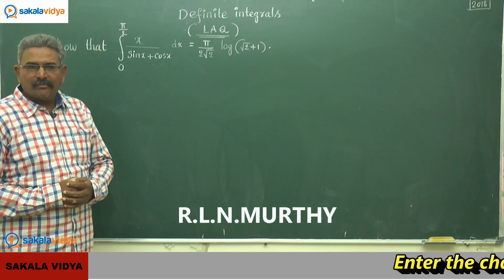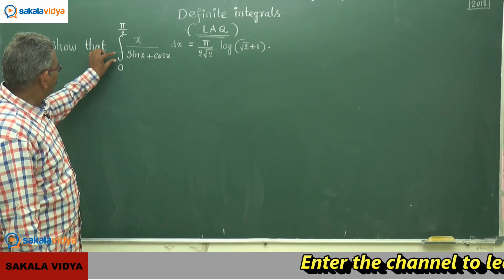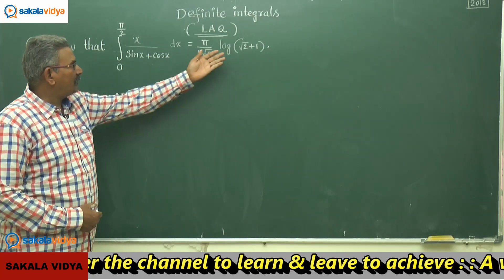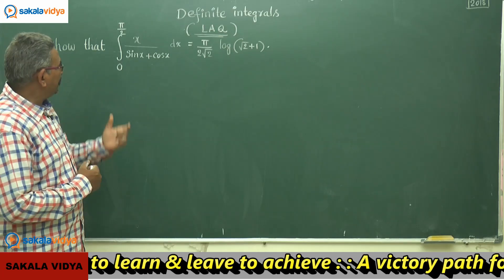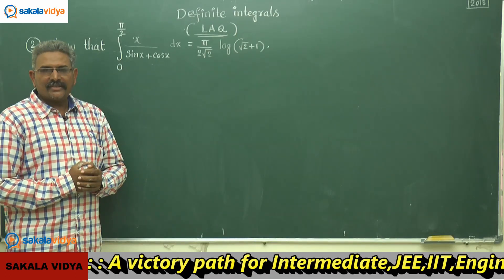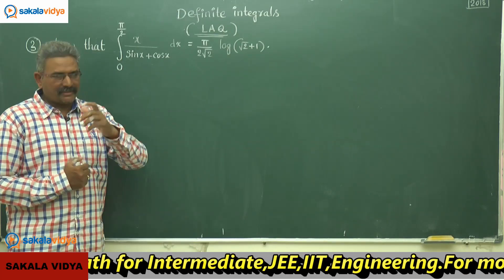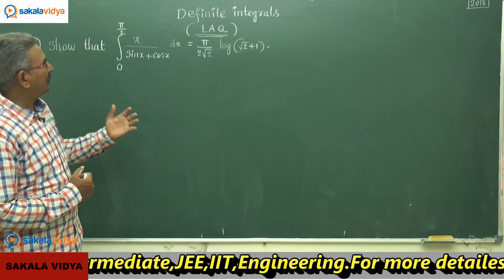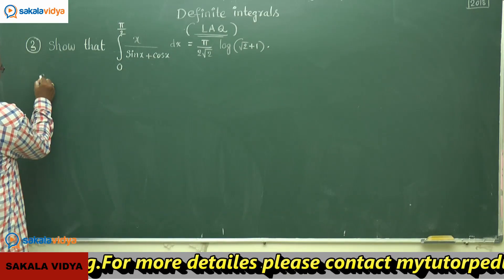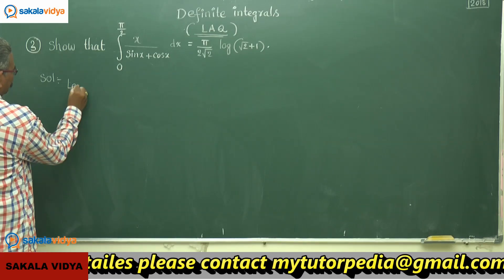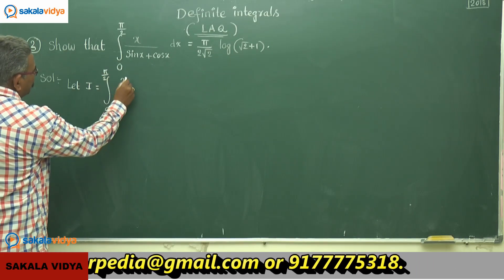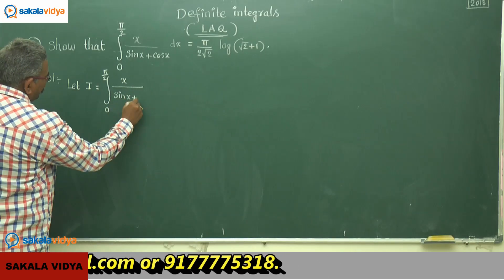Now we shall discuss one more problem. Show that integral 0 to π/2 of x divided by (sin x + cos x) dx equals π/(2√2) · log(√2 + 1). In this problem, it is better to use the property that the integral from 0 to a of f(x) dx equals the integral from 0 to a of f(a − x) dx. Let us use this property to solve the problem. Let I equal the integral from 0 to π/2 of x/(sin x + cos x) dx.